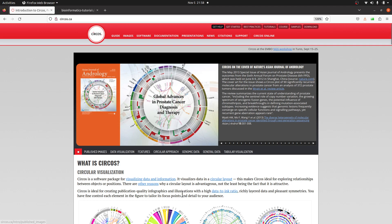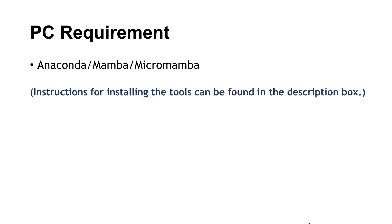We are going to install using Conda. So what you need to do is make sure you have Conda installed, or Mamba, or MicroMamba — any of these tools is fine. You can install either Anaconda, Mamba, or MicroMamba; any of them can be used to install Circos. This is the only requirement you need, and of course you need to have a Linux or Unix-like software system.